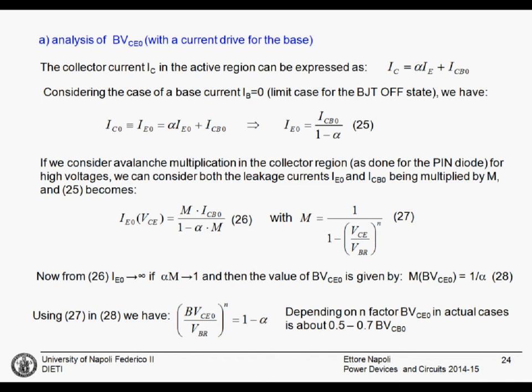In our previous example, if the collector junction for a PIN diode, the sustaining layer used for the collector junction, implemented in a PIN diode, was able to provide 1000 volts of breakdown voltage, for a BJT, we get a value that is between 700 and 500 volts.